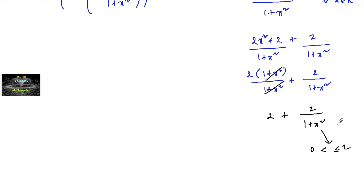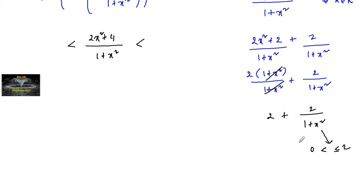So considering 0 to 2 for that term, the full expression (2x²+4)/(1+x²) lies between: when it is 0, we get 2+0=2, and when it equals 2, we get 2+2=4.